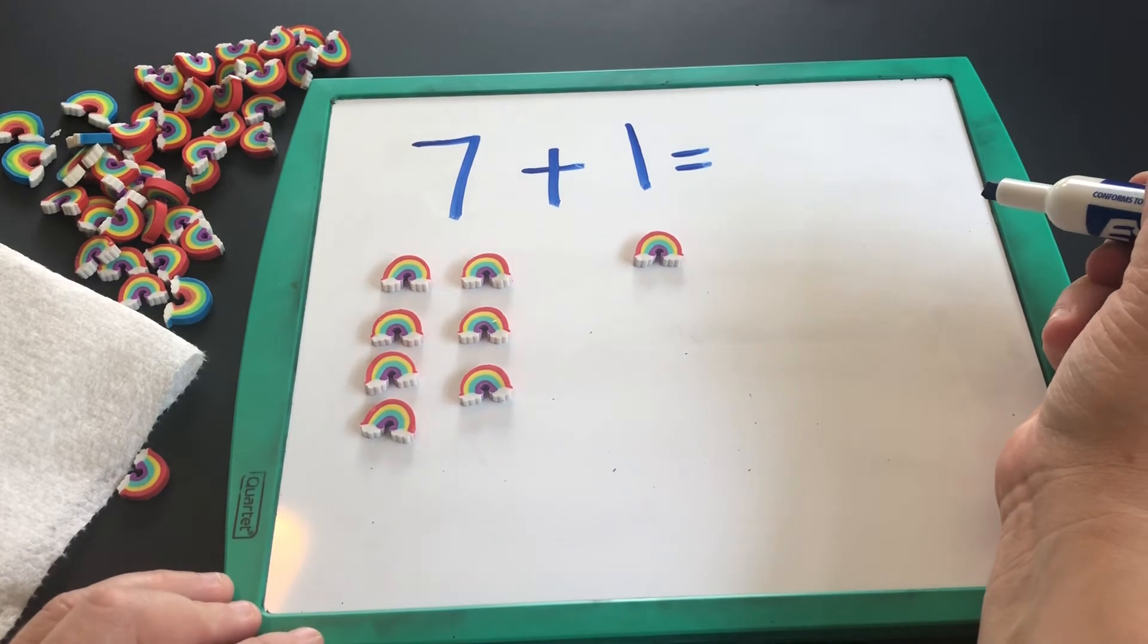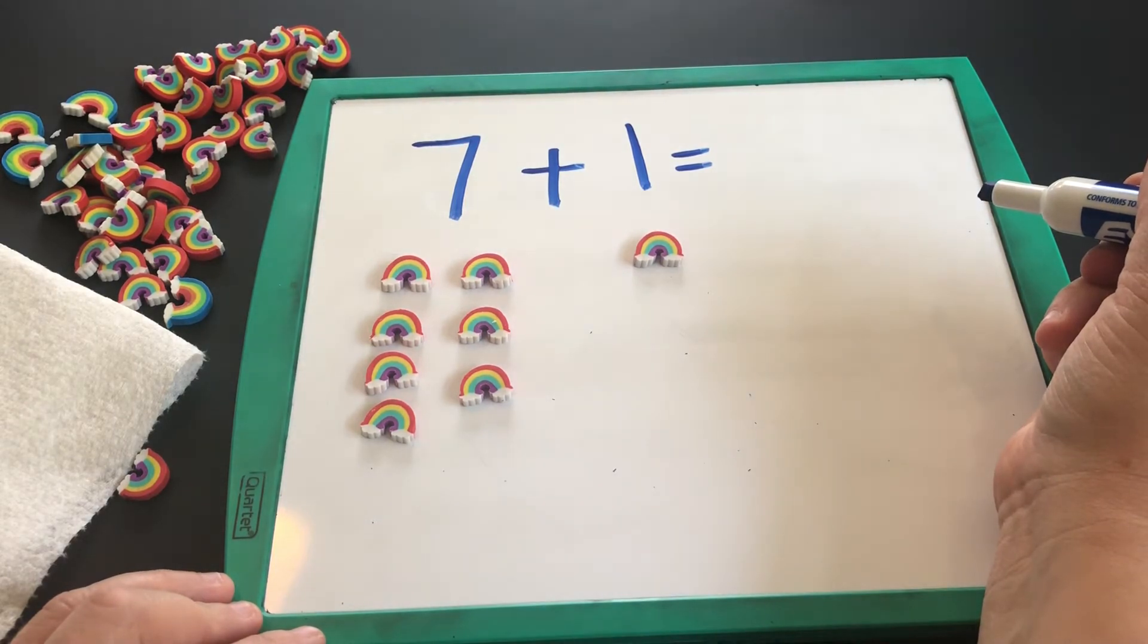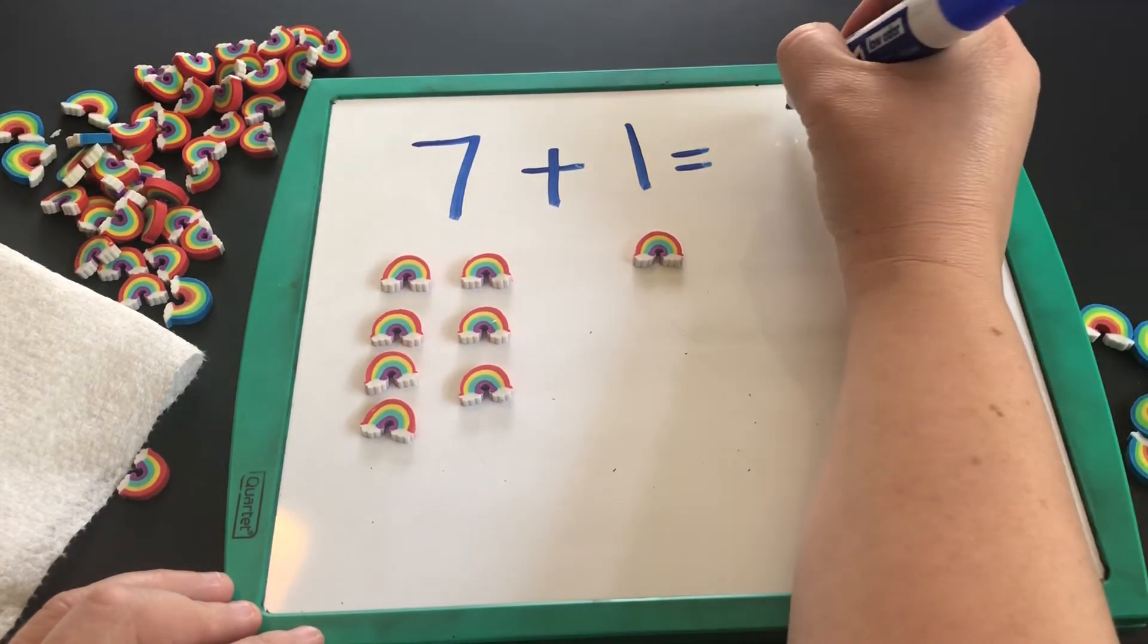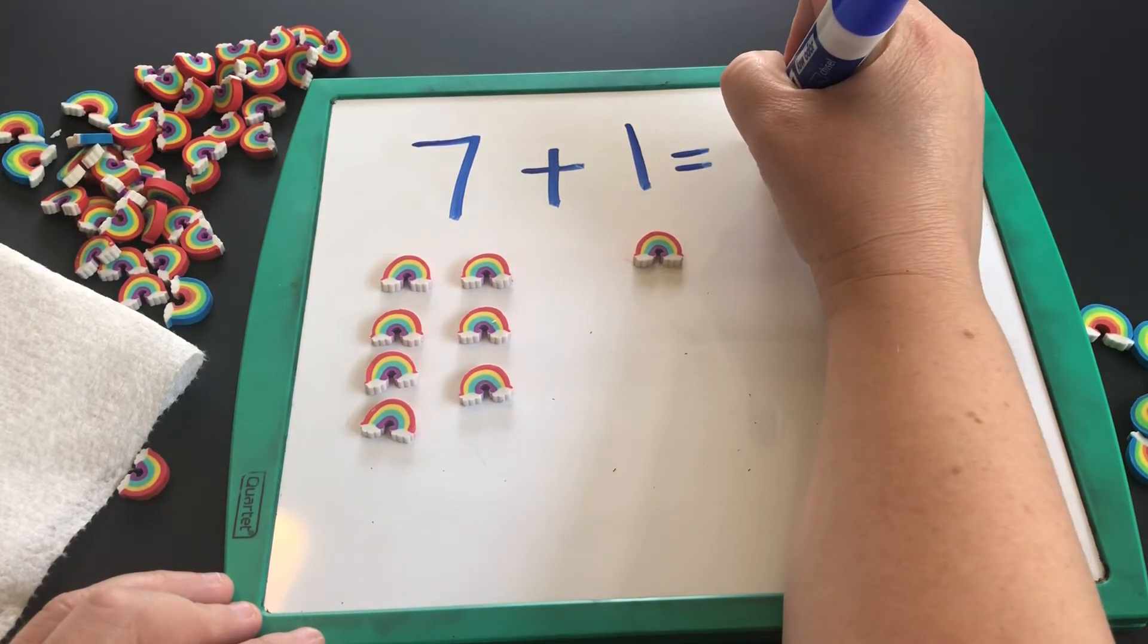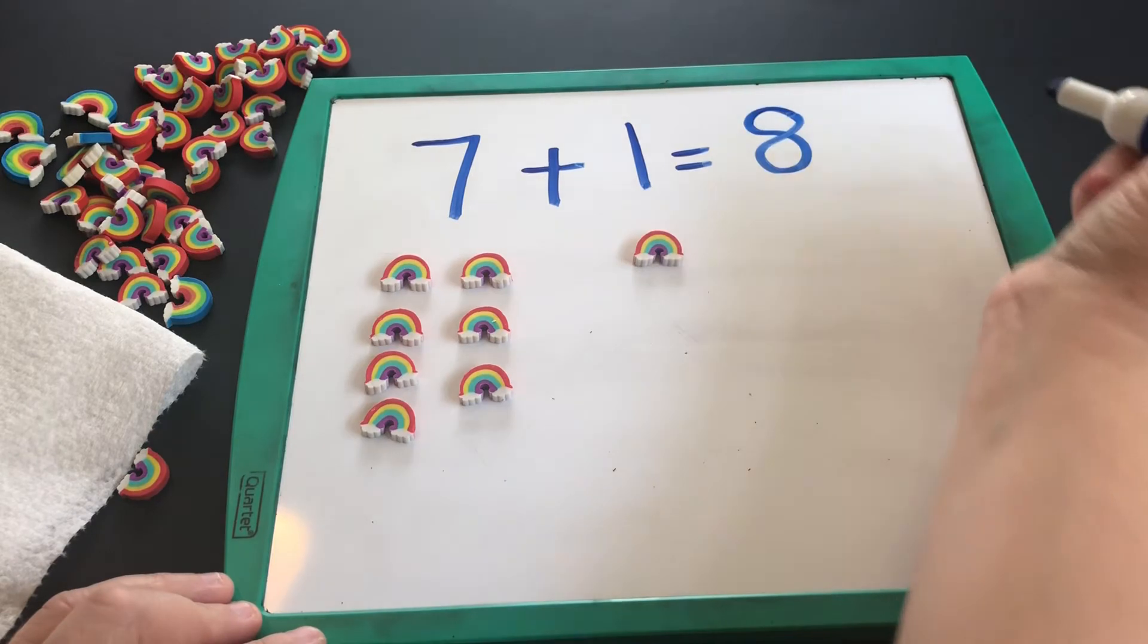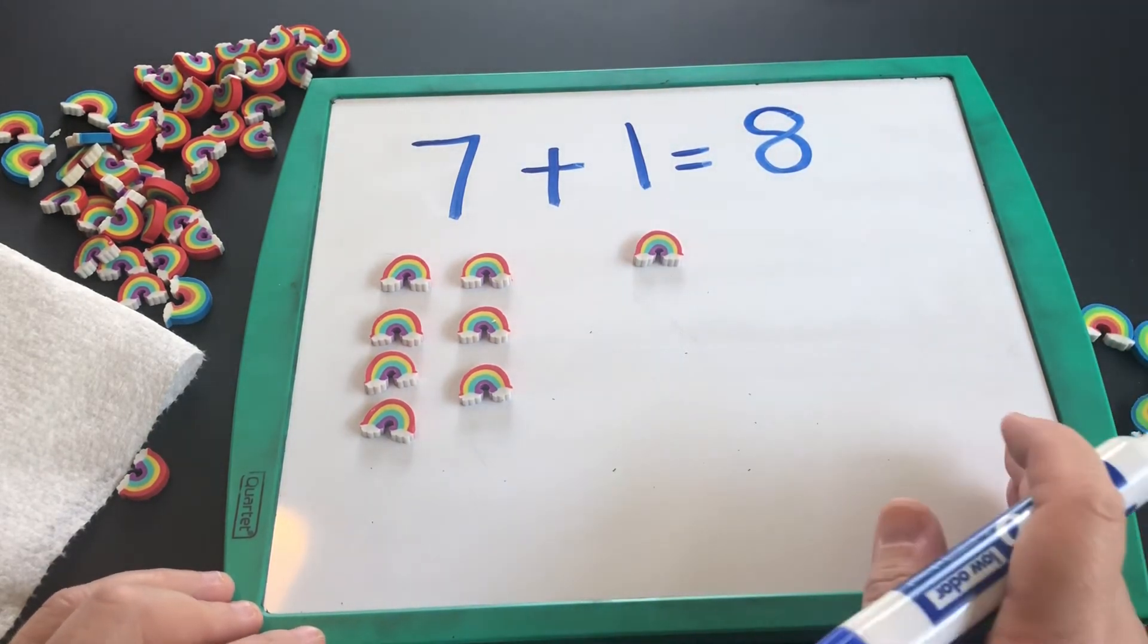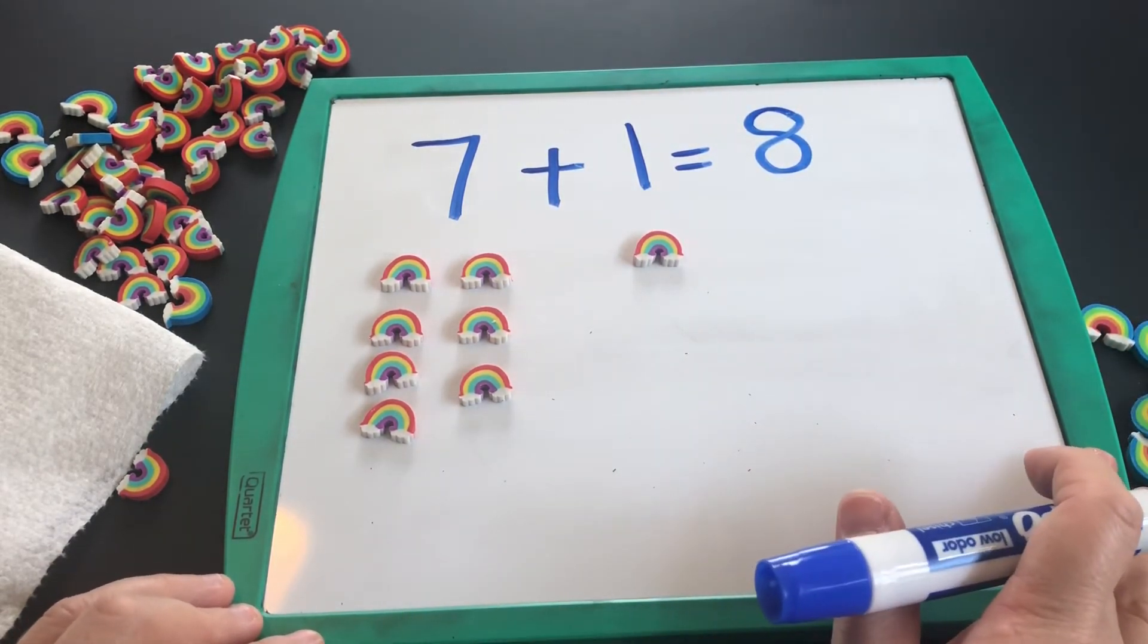How do you draw an eight, or how do you write an eight? It can be a little tricky. We're going to start with an S, then we come back around and up to make our eight. So we have eight rainbows total.